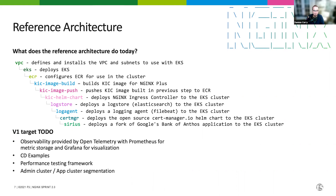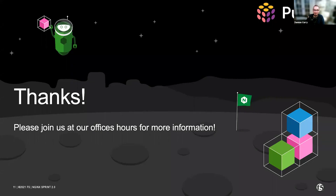The last thing we're working on — still up in the air for v1 — is breaking up functionality so that we have a separate application cluster and admin cluster, to more closely mimic what you'd see in a production-level environment. This keeps different utilities from stepping on each other's toes and lets you adjust resource parameters as needed. That was a ton of information — we've got way more to talk about, so please join us at our office hours starting right after this.